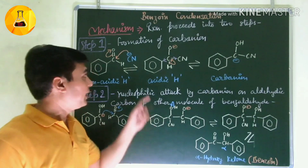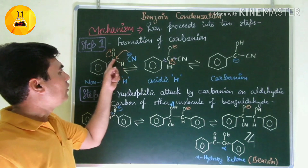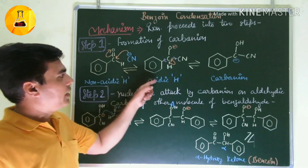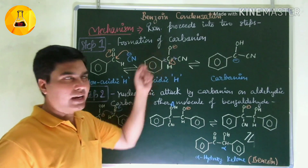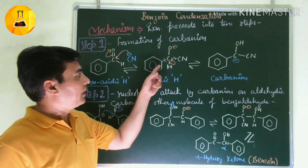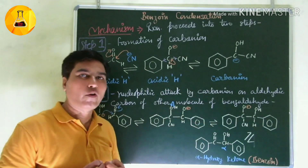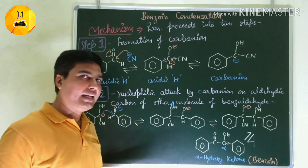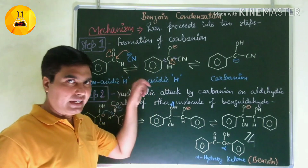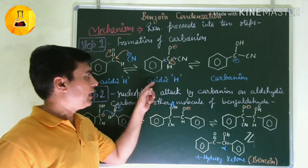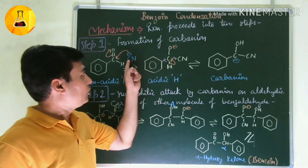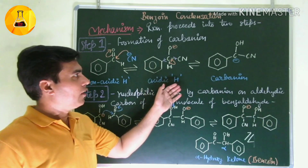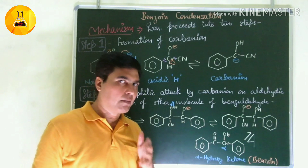CN- attacks the aldehyde carbon because of its polar nature. After the attack, CN- gets attached to the carbon. This makes the removal of the adjacent aldehyde hydrogen (as H+) much easier, giving a stable cyanohydrin. This hydrogen now becomes acidic — the nucleophile CN- converted the aldehyde to an acidic form, from which H+ is removed.